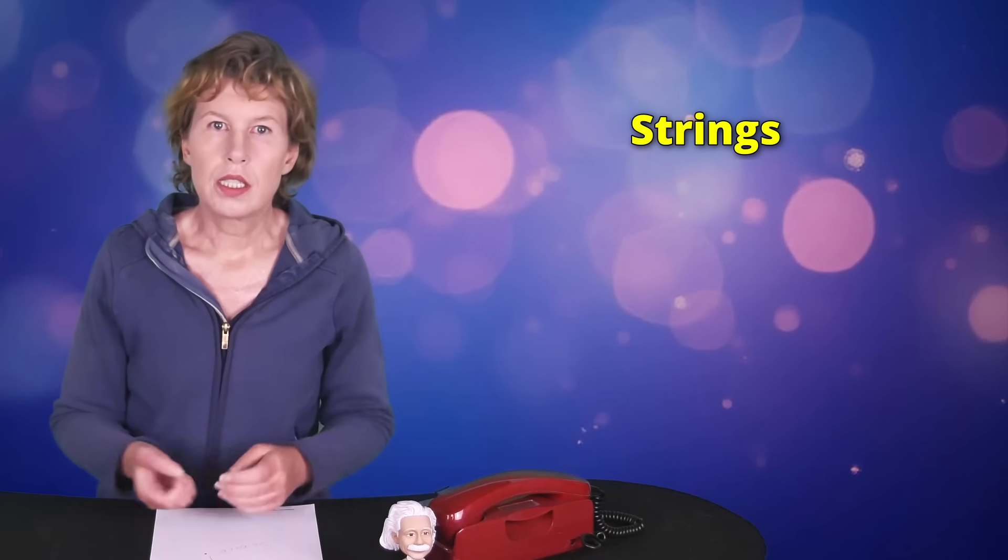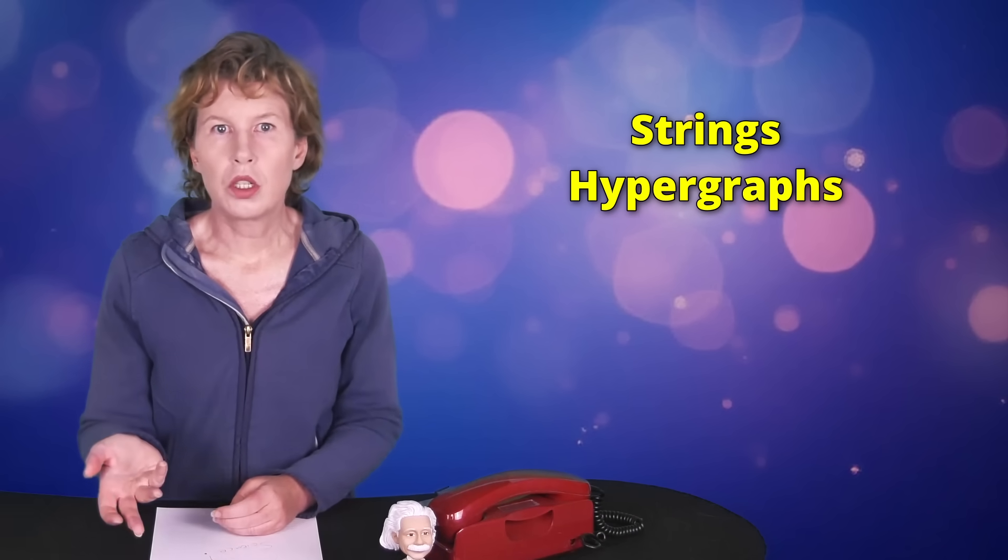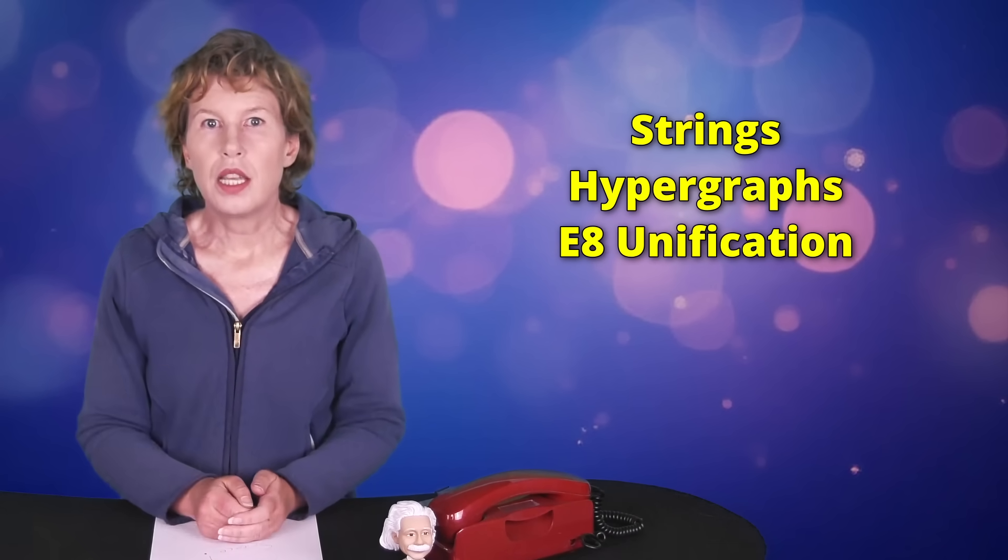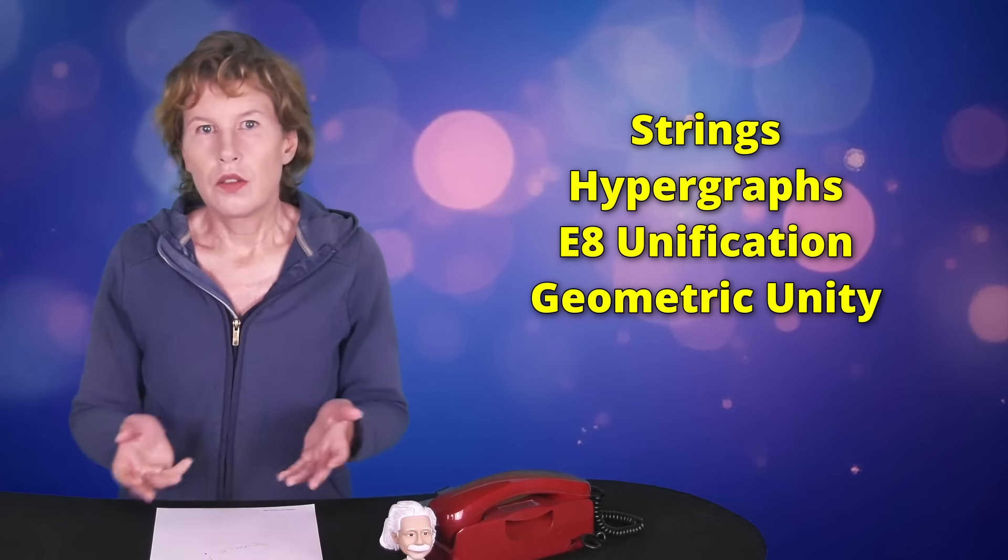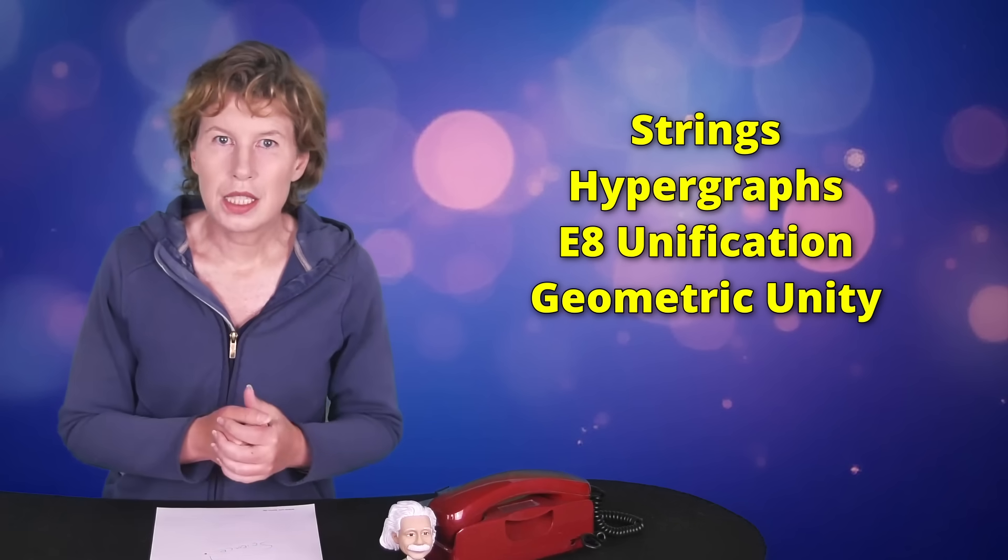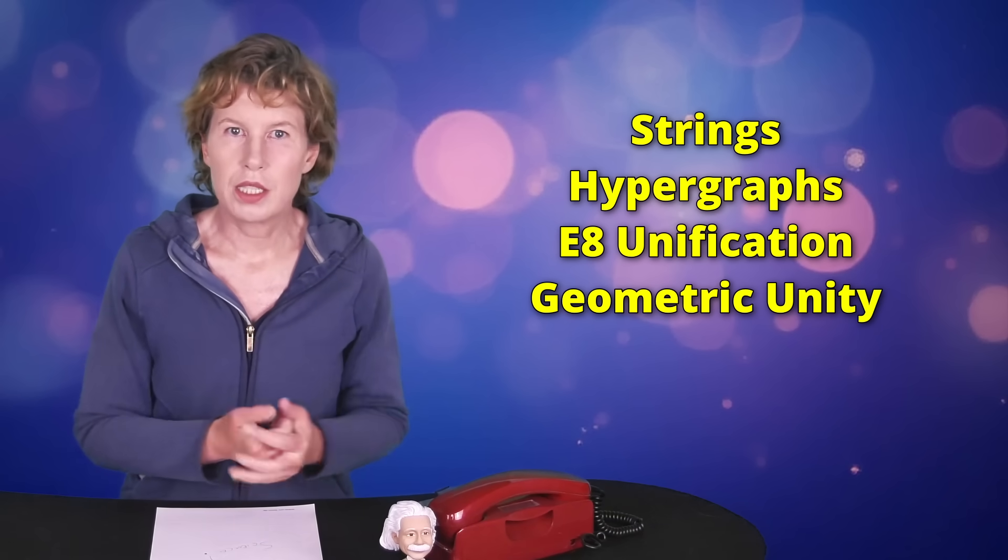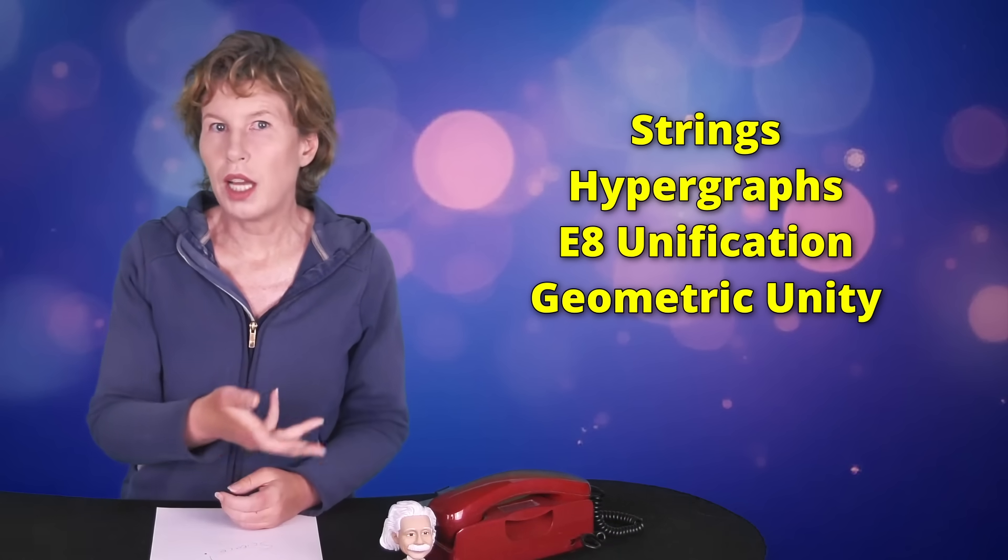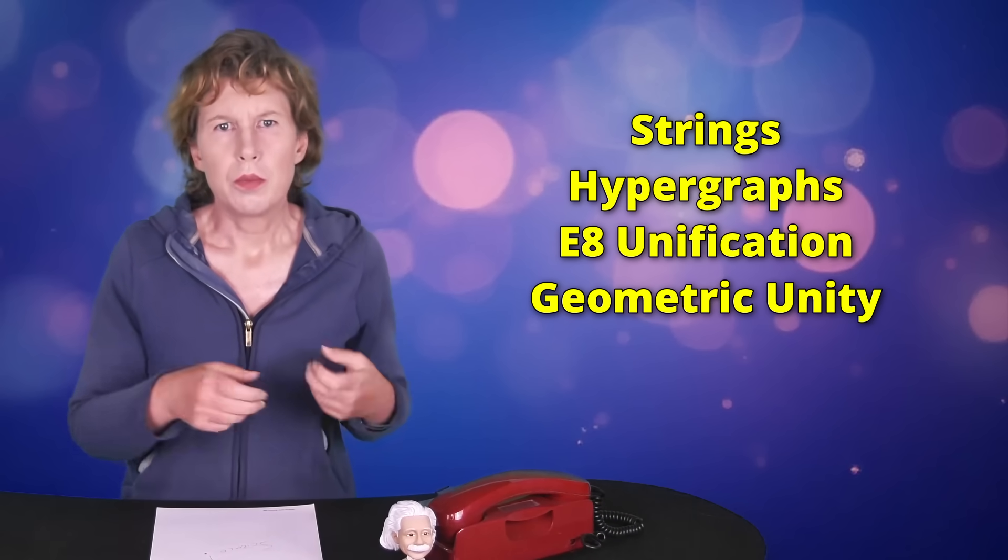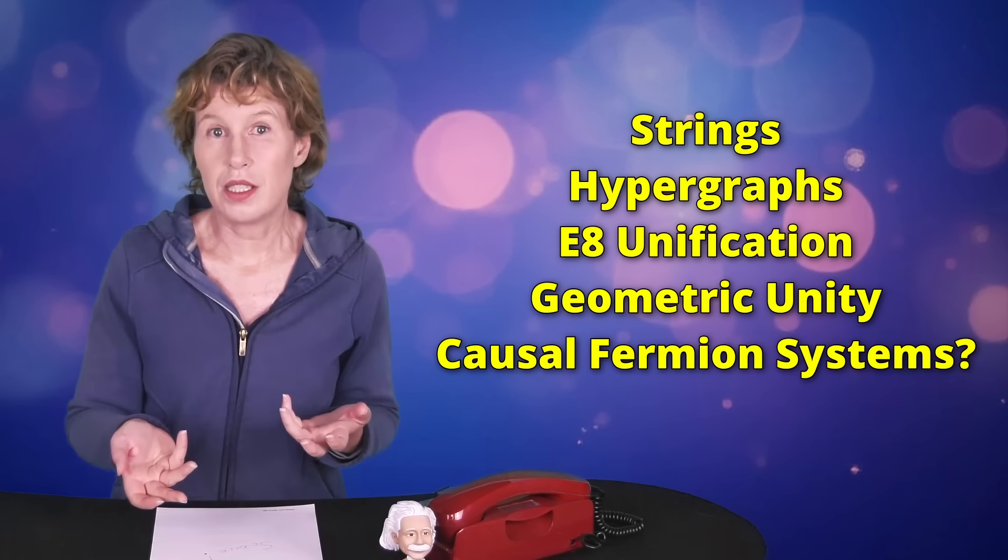If you look at the serious approaches, there really aren't many. There's string theory, and for what string theorists are concerned, this is also the end of the list. Well, I'm not a string theorist, so I'd add Steven Wolfram's hypergraphs, Garrett Lisi's E8, and on days I feel generous, Eric Weinstein's geometric unity, though for all I can tell it isn't a quantum theory which falls short of my expectations. In any case, I think these are genuinely new and possible avenues, and you've all heard of them. But no one ever mentions causal fermion systems.